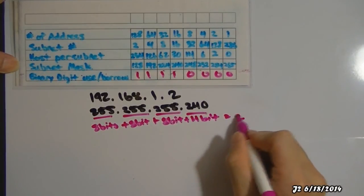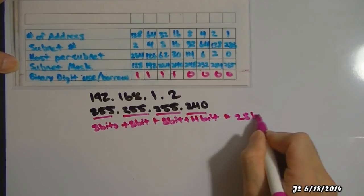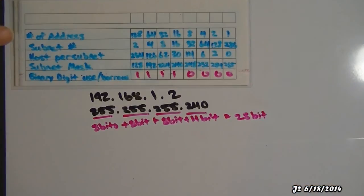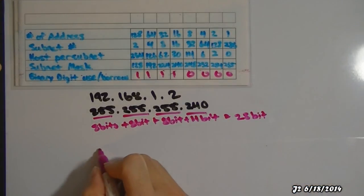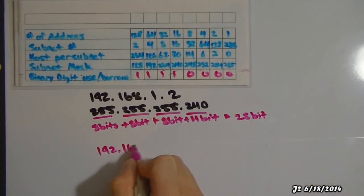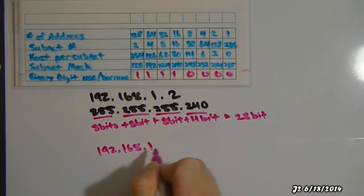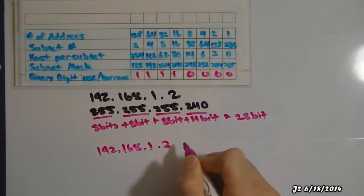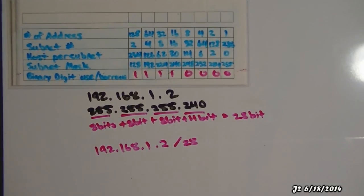And that will equal 28 bits. So I will write this as 192.168.1.2 /28. And again, thanks for watching. Hopefully this little review will help you determine how to borrow bits using the subnet mask.